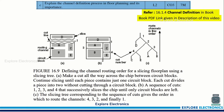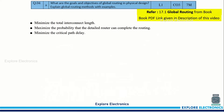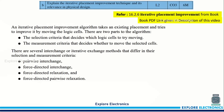Then explain the channel definition process of floor planning and its importance. The diagram is shown — please refer to the textbook for a clear answer. Then: what are the goals and objectives of global routing and physical design, and explain global routing methods with an example. The goals are to minimize total interconnect length, maximize the probability that a detail router can complete the routing, and minimize the critical path delay. Refer to section 17.1 from the textbook link given in the description.